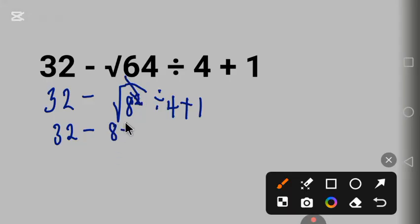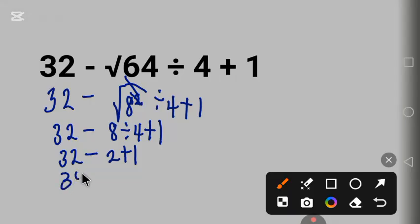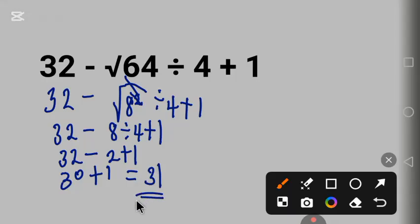We solve: 8 divided by 4 is 2, plus 1. We solve the subtraction first before the addition, so 32 minus 2 is 30, plus 1 equals 31. This is the correct answer.